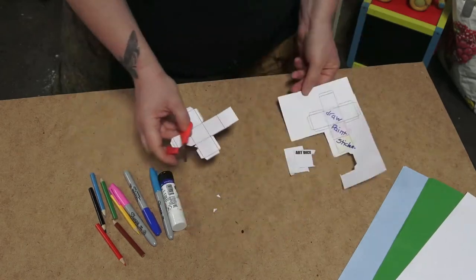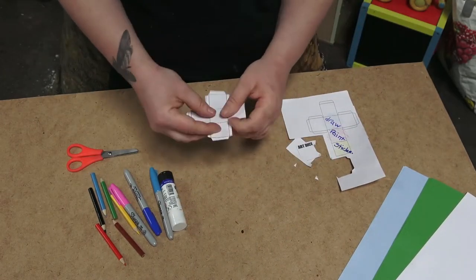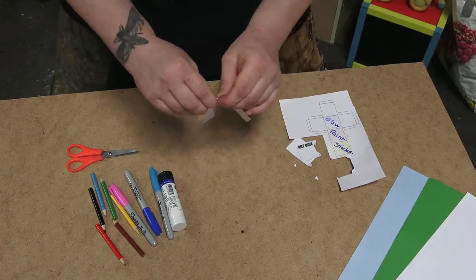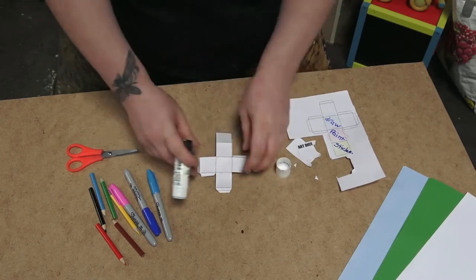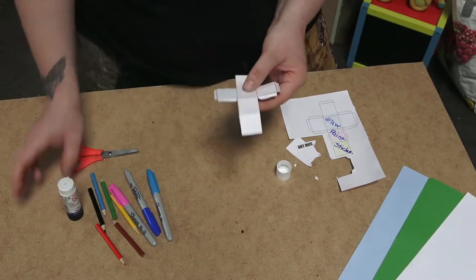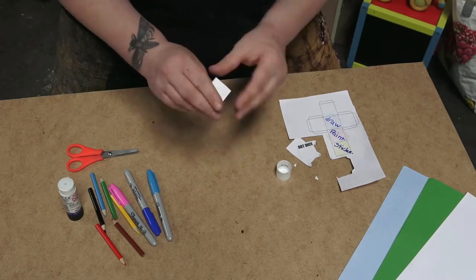As you can see, assembly is really simple. Once you've finished, you just cut it out, fold all the lines, stick the tabs, and hold it together until it's partially dry.